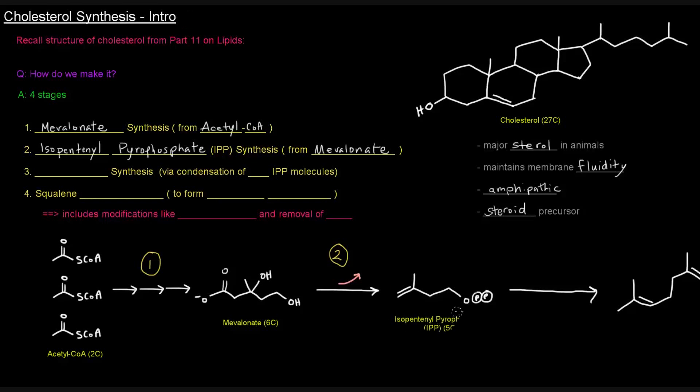And it's a five-carbon molecule, hence the pent there, referring to the five carbons. So mevalonate being six carbons long, isopentenyl pyrophosphate being five carbons long, we lose a carbon there as a carbon dioxide. We'll see more about that later. So that's stage two.